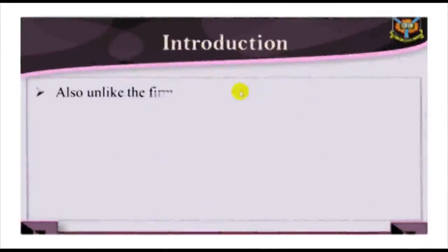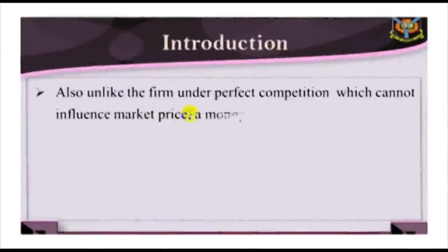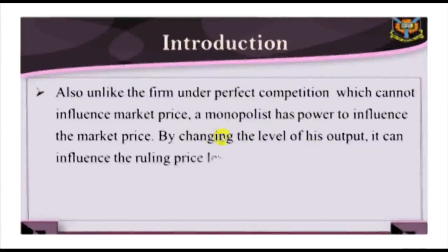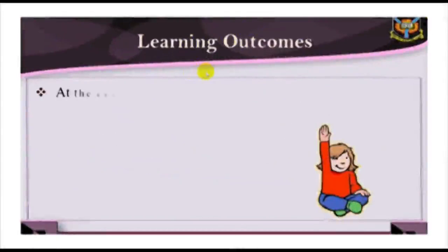A monopoly and perfect competition represent two polar extremes of market situations. Monopoly occurs when there is a single seller in the market. In this case, it is impossible to distinguish between a firm and an industry. Unlike the firm under perfect competition, which cannot influence market price, a monopolist has the power to influence the market price by changing the level of its output to influence the ruling price level.